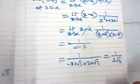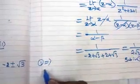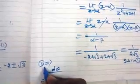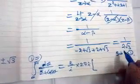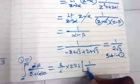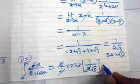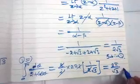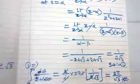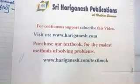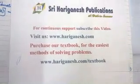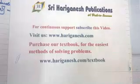Substituting into equation 1: the given integral equals (2/i) × 2πi × (1/2√3). The 2s cancel and the i's cancel, giving the final answer 2π / √3. For continuous support, subscribe and visit www.arionist.com to purchase our textbook for the easiest method of solving problems.